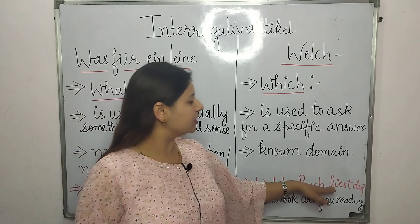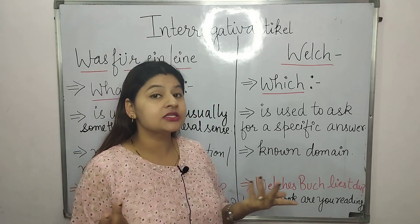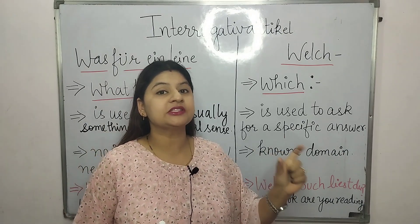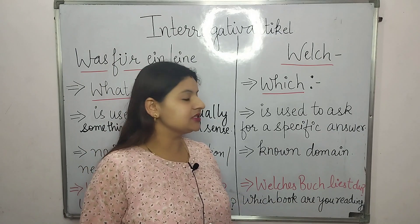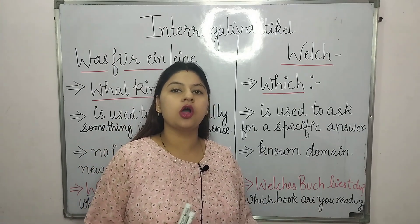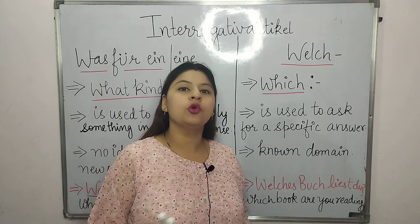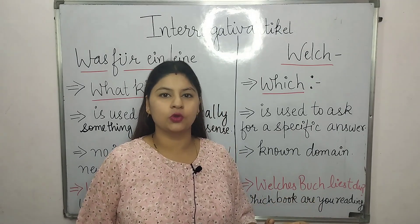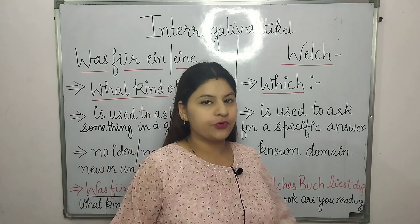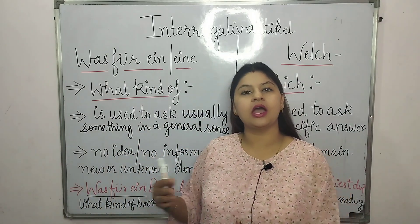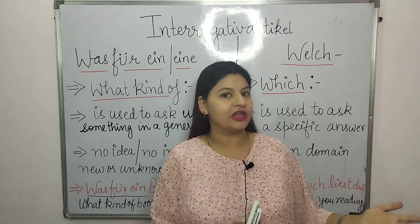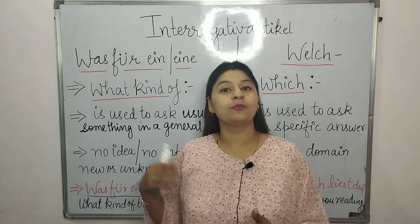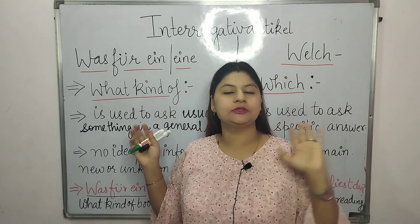When something known is there, we use 'Welcher,' 'Welches,' or 'Welche.' For example: 'Welches Buch liest du?' — which book are you reading? I am reading the book of Chetan Bhagat. So: 'Was für ein' for when something is unknown, and 'Welcher/Welches/Welche' for when something is known. Now let's see more examples to learn both topics in detail.